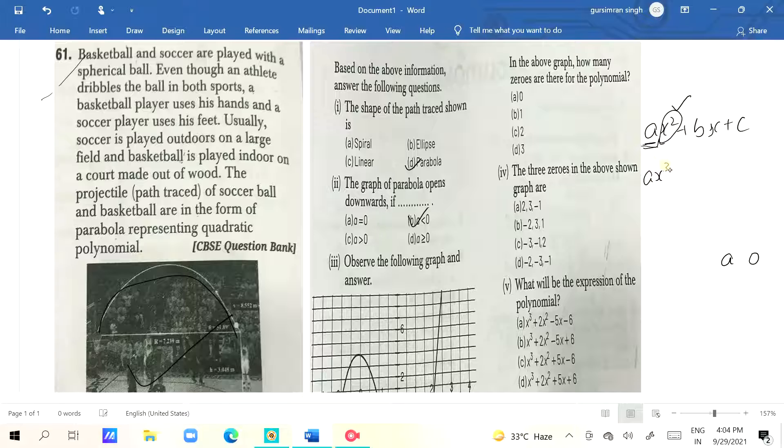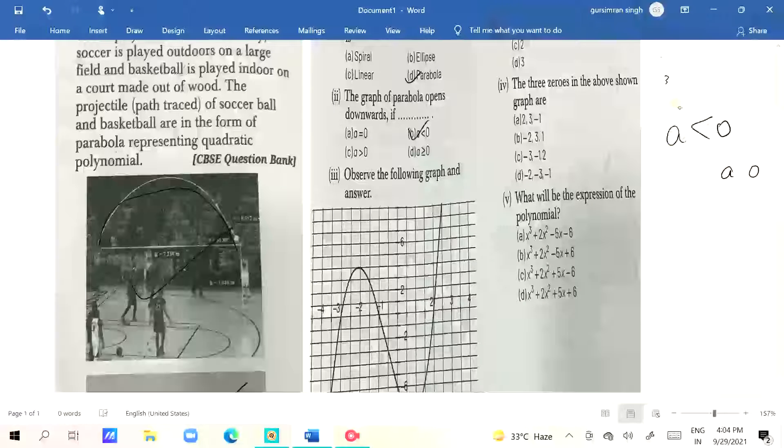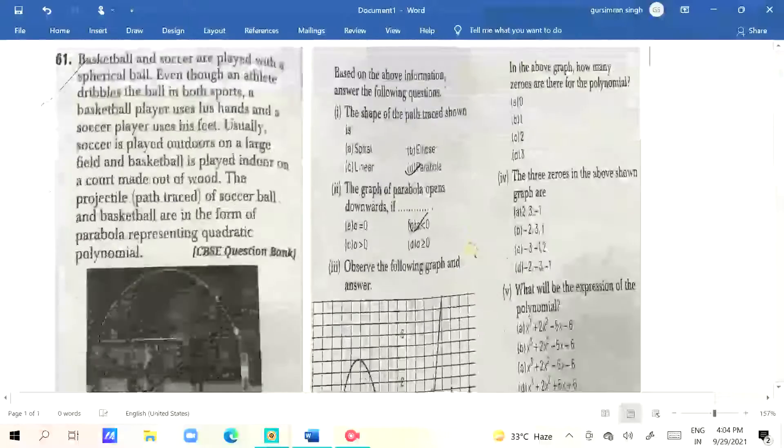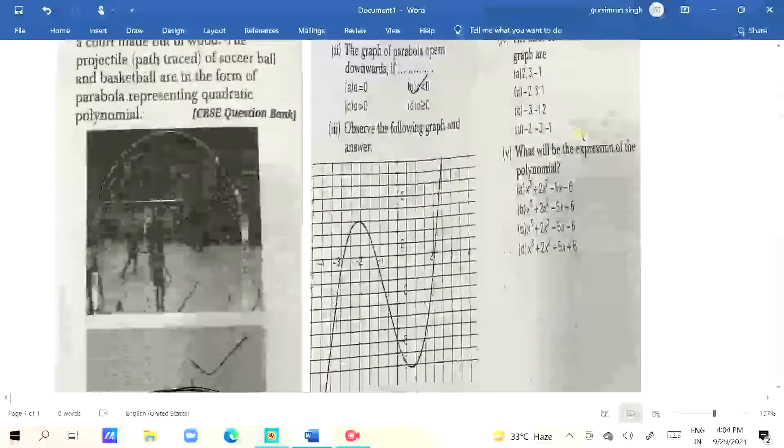If I have ax³ plus bx² plus cx plus d, here the highest degree is 3, so it will be the coefficient 'a'. If the 'a' value is less than 0, it will be downward opening.